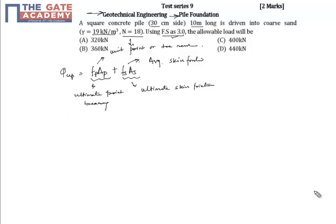Now we know that F_P, as per Meyerhoff's standard SPT test, F_P is given as 40N into D upon B, subjected to a maximum of 400N. In this case, putting the value 40 into 18 into 10 divided by 0.3, as D is 10 meter and B is 30 cm.